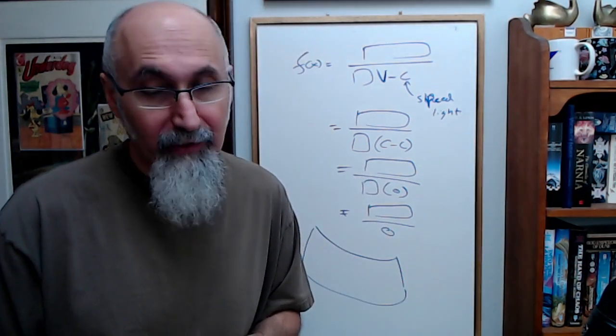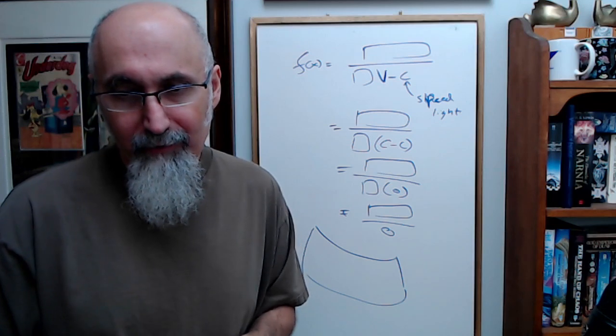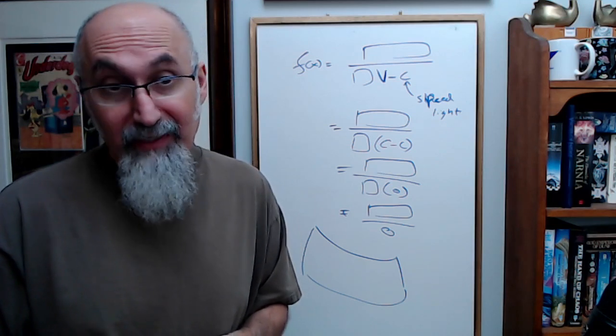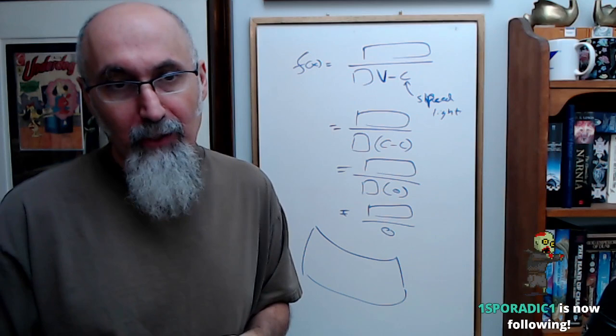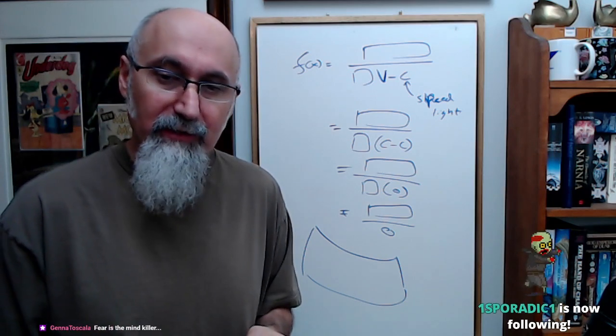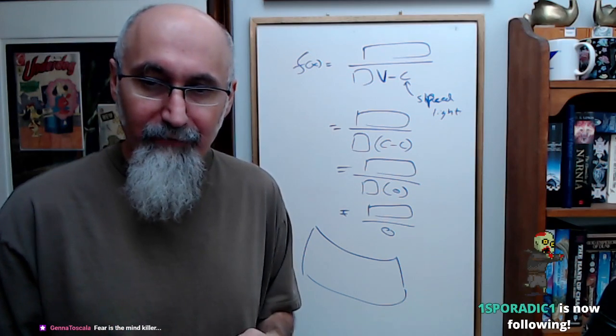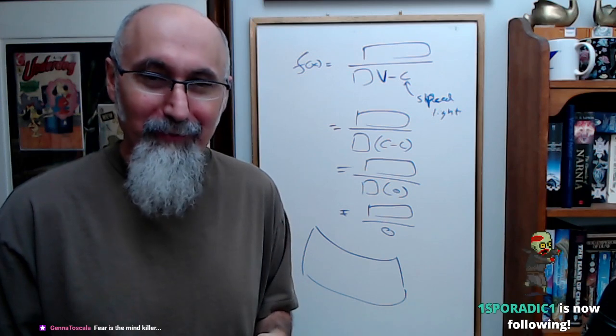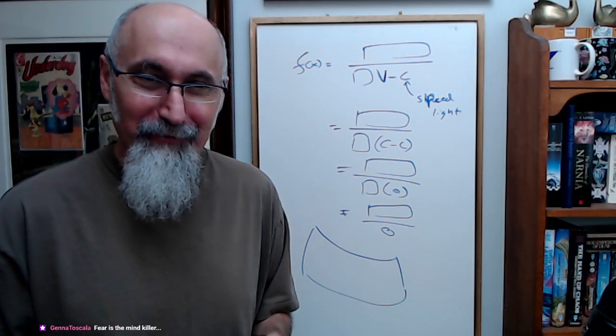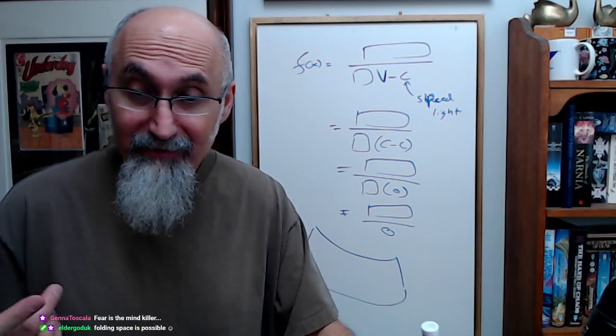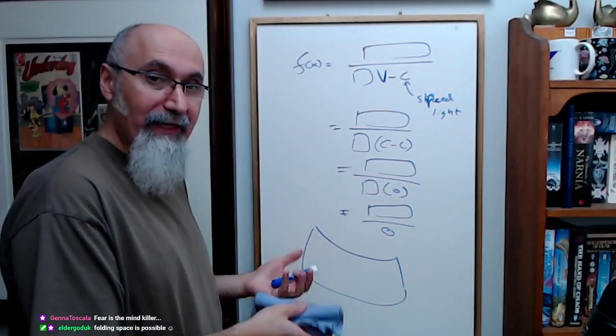If this is your space, let's say, you fold this, you bring these two points together, you step over, unfold, and you've traveled light years without moving. That's different though. Light can travel at the speed of light because light is light. Fear is the mind killer.